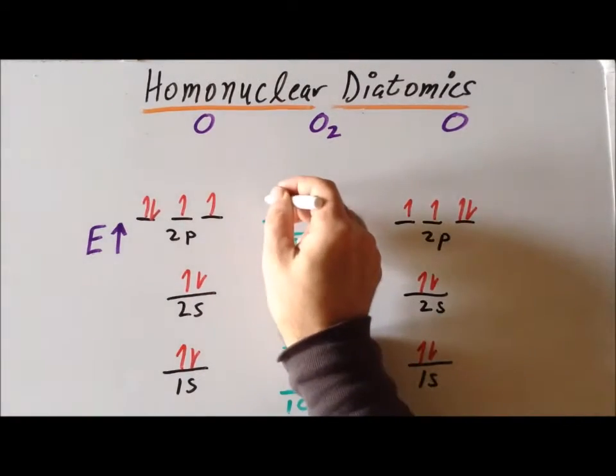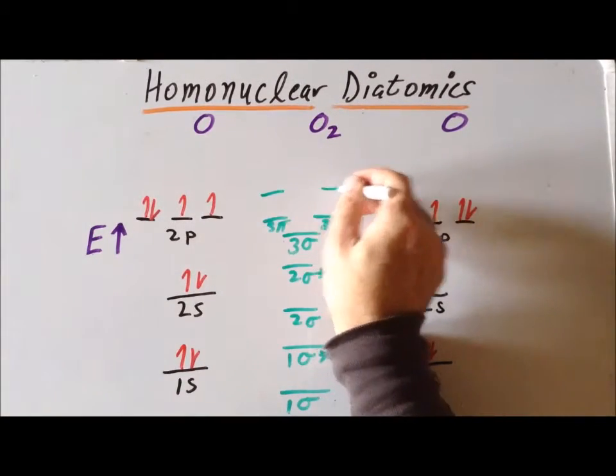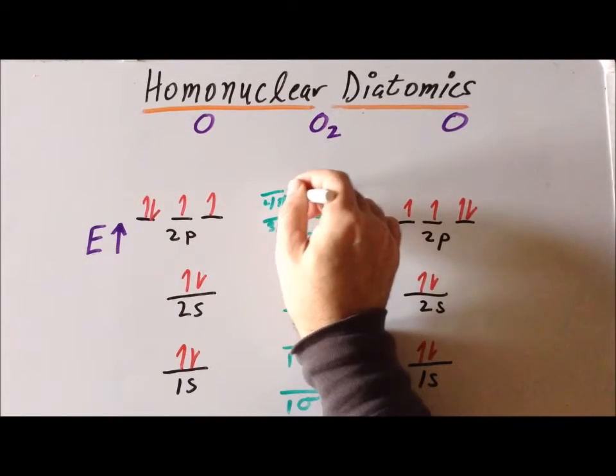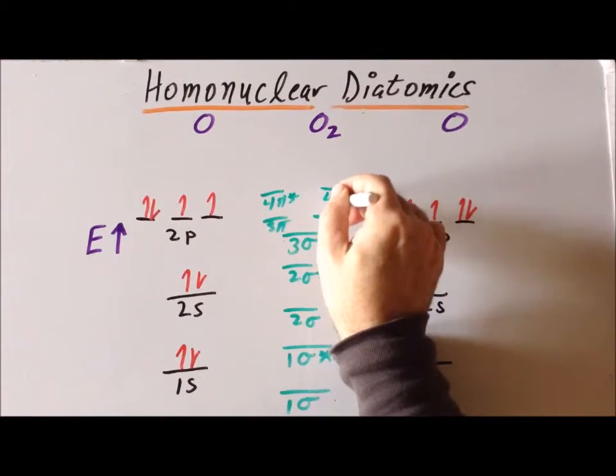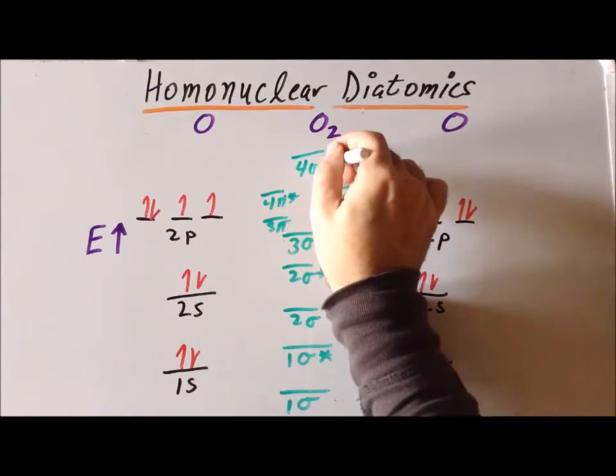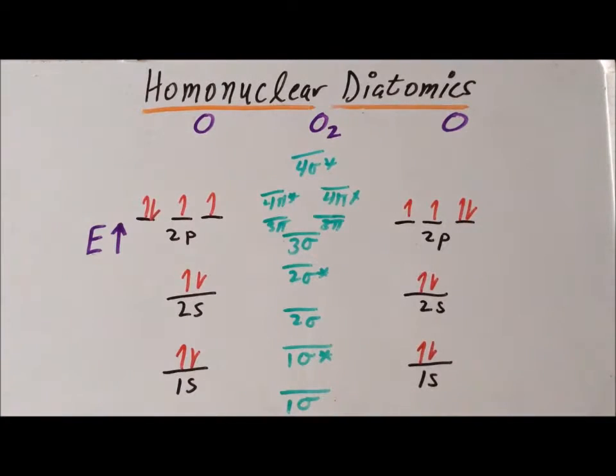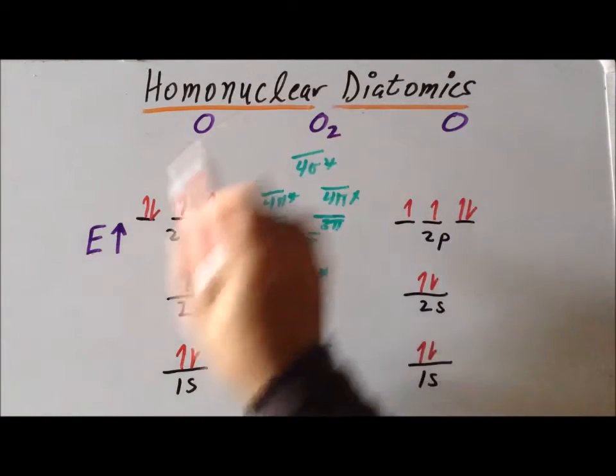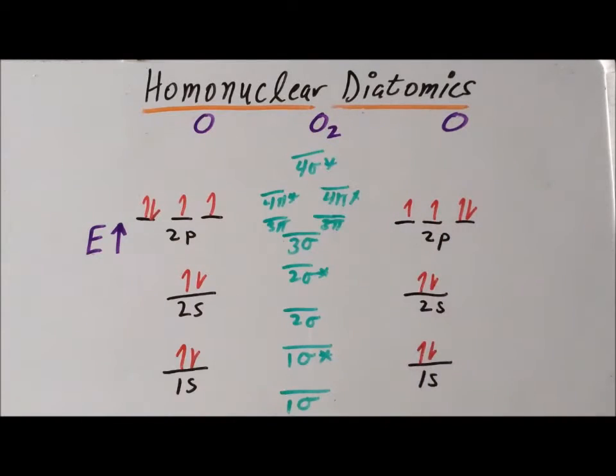Then we have higher-energy anti-bonding combinations, which are exactly as before. So, we have 4 pi star and then the highest energy is going to be 4 sigma star. So, we notice that this style of MO diagram is different than the early parts of the periodic table. And this will be the same style of diagram for all the ions of oxygen and for the compound difluorine.